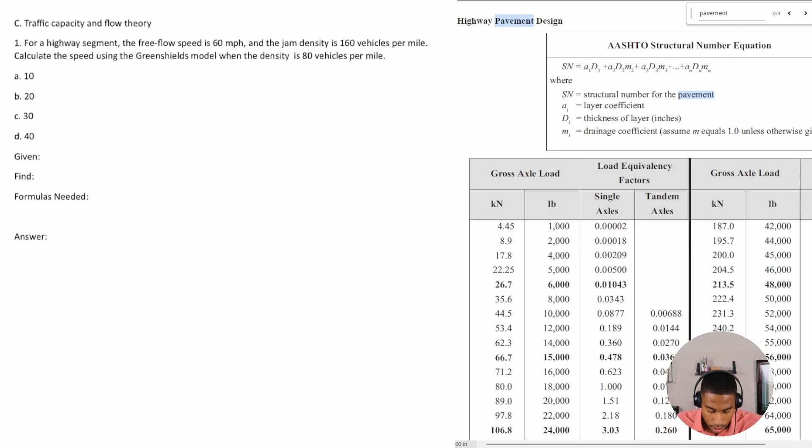All right, so we want to start by looking at what we're given. Well, we know free flow speed is 60 miles per hour. We know that we have a jam density.